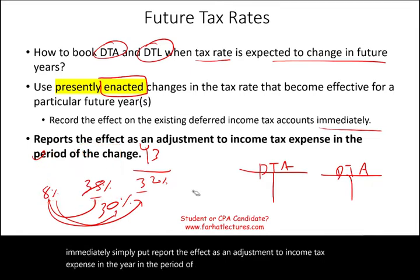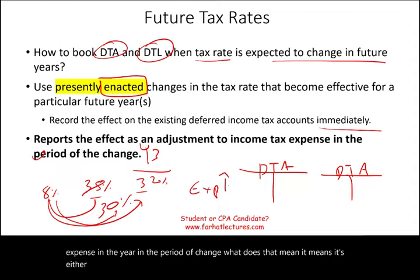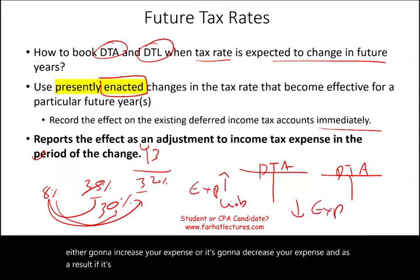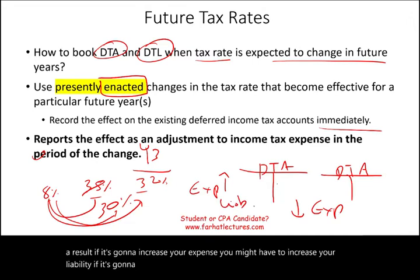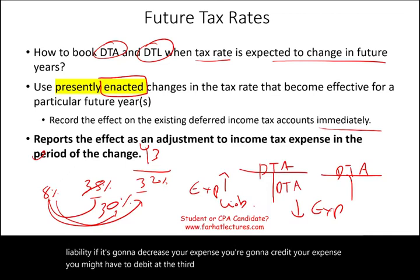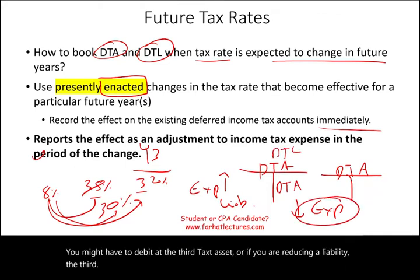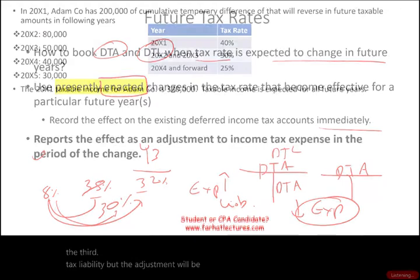That means it's either going to increase your expense or decrease your expense. As a result, if it's going to increase your expense, you might have to increase your liability. If it's going to decrease your expense, you might have to debit a deferred tax asset, or if you are reducing a liability, the deferred tax liability. But the adjustment will be to income tax expense.